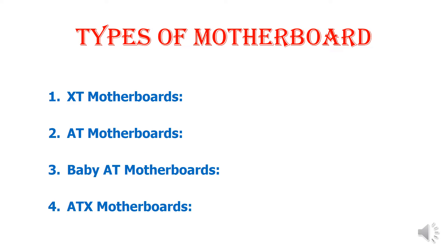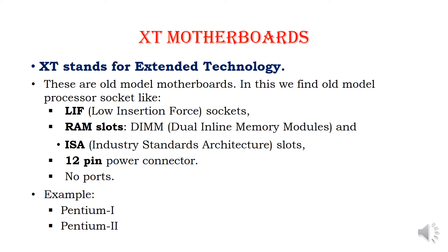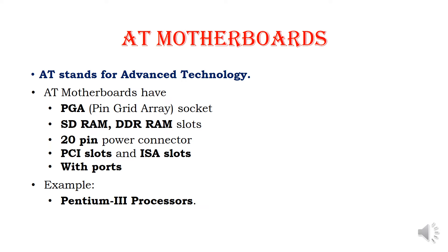Then, types of motherboard. We have mainly four types of motherboards: XT motherboard, AT motherboard, Baby AT motherboard, and ATX motherboard. The XT motherboard uses a 12-pin power connector and the AT uses a 20-pin power connector, with PCI slots and ISA slots.